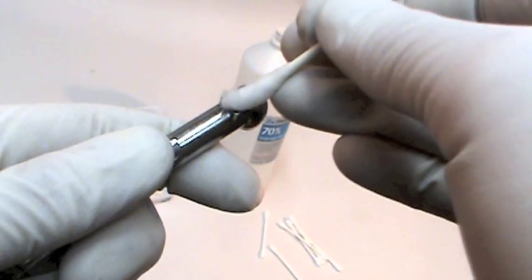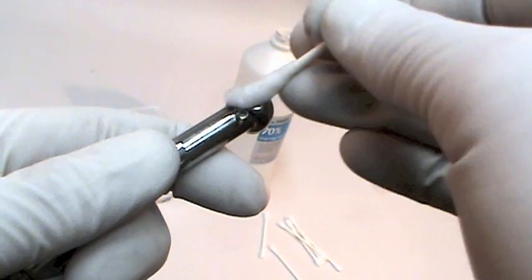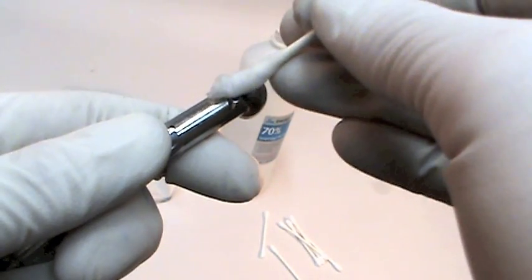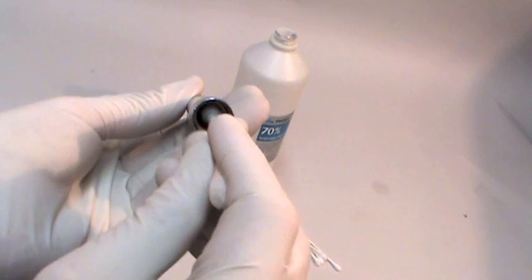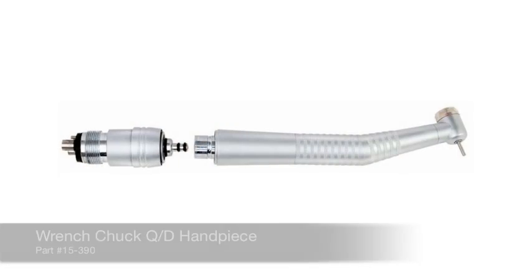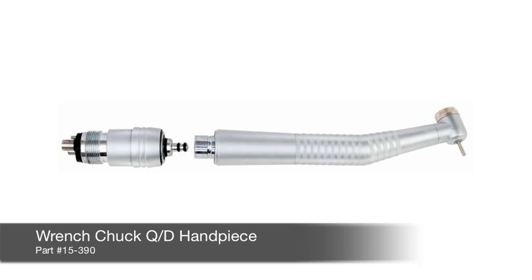Handpiece fiber optic surfaces can be cleaned using isopropyl alcohol or acetone on a cotton applicator. Don't pick the fiber optic ends with any type of sharp instrument. The quick disconnect connections and handpiece exterior can also be wiped down with isopropyl alcohol.